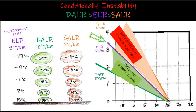In conditional stability, the environment lapse rate falls between the dry adiabatic lapse rate and the saturated adiabatic lapse rate. The saturated adiabatic lapse rate is on the warm side and the dry adiabatic lapse rate is on the cool side of the environment lapse rate. This means saturated parcels will be unstable and dry parcels will be stable. It is called conditional stability because one must know the relative humidity of a parcel to determine if it will be stable or unstable. The condition is: dry adiabatic lapse rate > environment lapse rate > saturated adiabatic lapse rate.